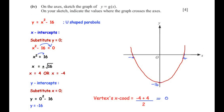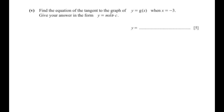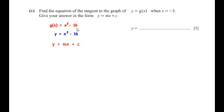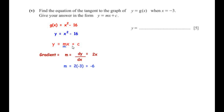Find the equation of the tangent to y equals g(x) when x equals negative 3, giving the answer in the form y equals mx plus c. Since y equals x squared minus 16, we begin by finding the gradient m through differentiation. We differentiate y with respect to x using the power rule.